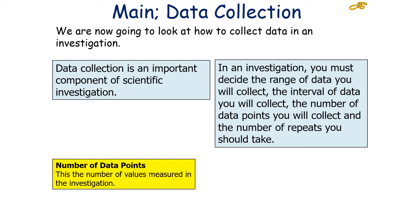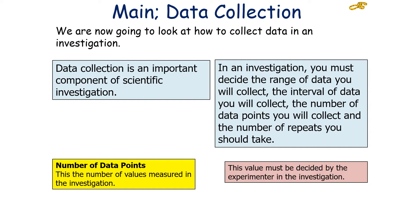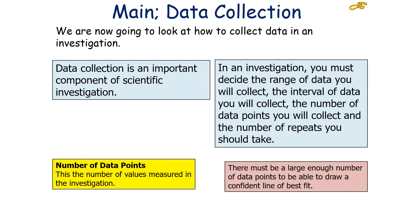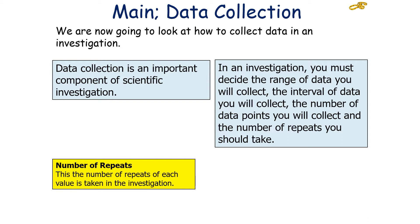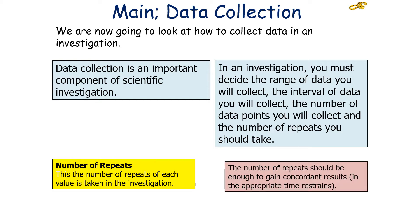The number of data points is the number of values measured in the investigation, and once again the experimenter has to decide this. There must be a large enough number of data points to draw a confident line of best fit — a minimum of at least seven different values. You've also got to decide the number of repeats: how many repeats of each value you take, which should be enough to gain concordant results within the appropriate time constraints.